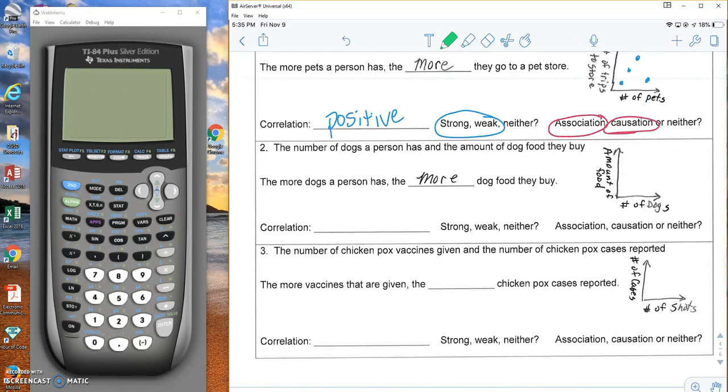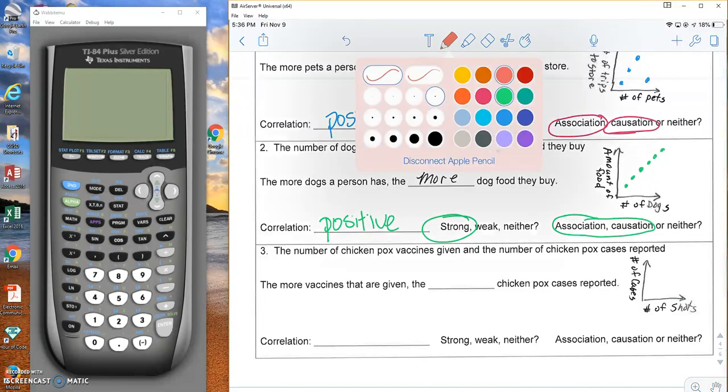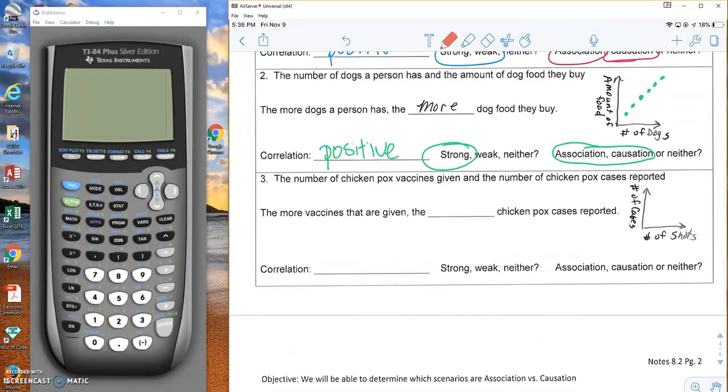The number of dogs you have and the amount of dog food you buy. The more dogs you have, the more dog food you would need. Each dog eats the same amount of food. Let's say you have the same types of dogs. Definitely a positive correlation there and definitely a strong correlation. I would say these are associated and caused. The dog food that you're buying is because you have dogs. So those are definitely associated and the more you have, the more food you will need. One causes the other. The less dogs you have, the less food you'll need.